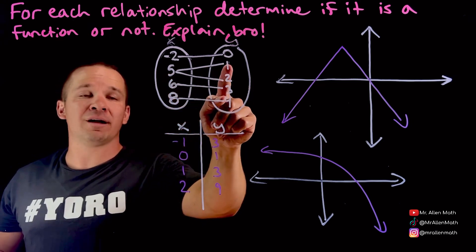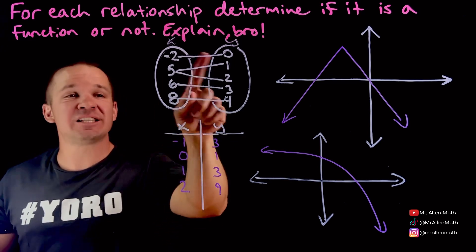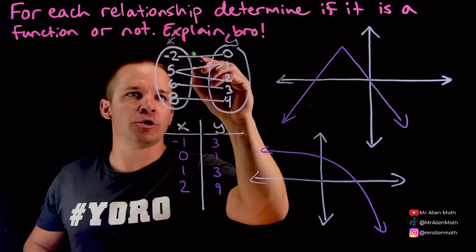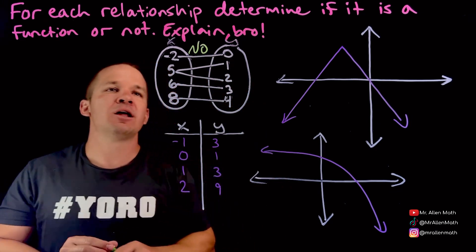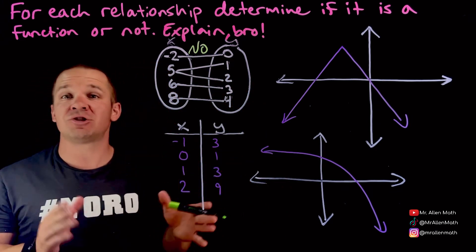Five maps onto one and a two. I can't have that. This is my input. I got more than one output. So nope, no. My input there had more than one output, not going to be a function, it's just a relation.